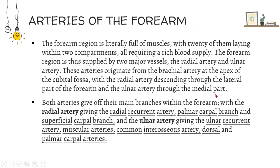Arteries of the forearm. The forearm region is literally full of muscles, with 20 of them lying within two compartments, all requiring a rich blood supply. The forearm is supplied by two major vessels: the radial artery and ulnar artery. These originate from the brachial artery at the apex of the cubital fossa, with the radial artery descending through the lateral part of the forearm and the ulnar artery through the medial part. Both arteries give off their main branches within the forearm, with the radial artery giving the radial recurrent artery, palmar carpal branch, and superficial carpal branch, and the ulnar artery giving the ulnar recurrent artery, muscular arteries, common interosseous artery, and dorsal and palmar carpal arteries.